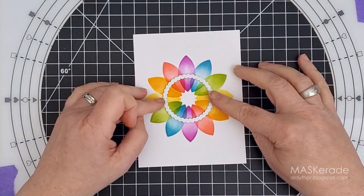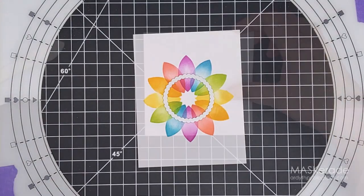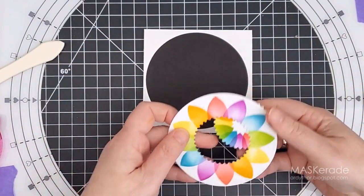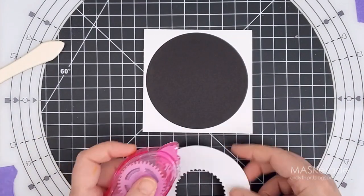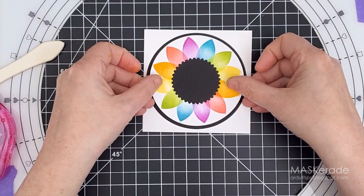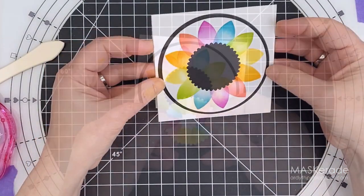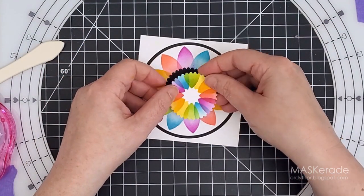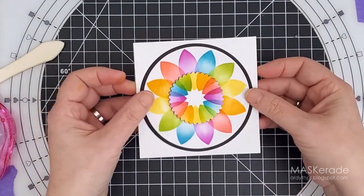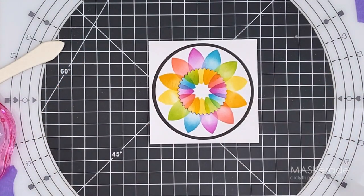Next I used the scallop circle die from the Heartfelt Wishes coordinating die set and I cut out the center of my daisy so I can have a little more fun with my colors. To assemble the card I put down a black circle on my card base and I glued down the outside ring of my rainbow daisy. For the center I put foam tape on the back to pop it up, but before I put it in place I turned it so that the colors in the center don't line up with the ones out at the edges.